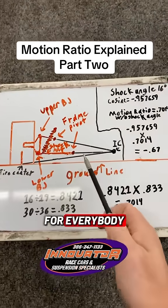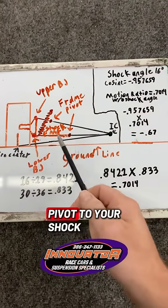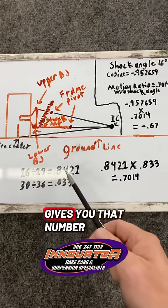I drew out a quick example for everybody. So your first number is going to be 16. That's going to be from your frame pivot to your shock and then from your frame pivot to your ball joint. That's going to give you 19.